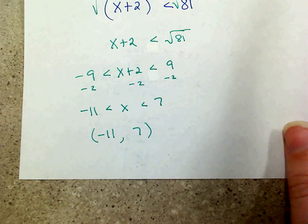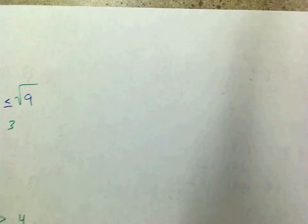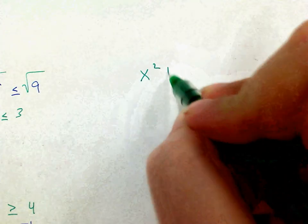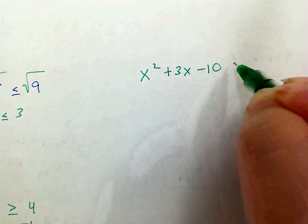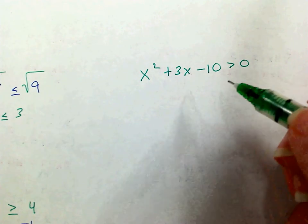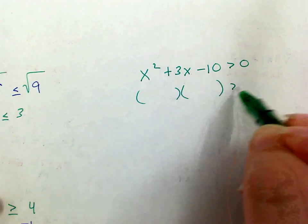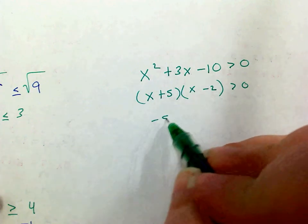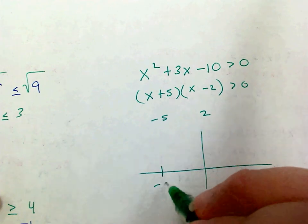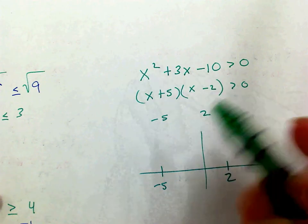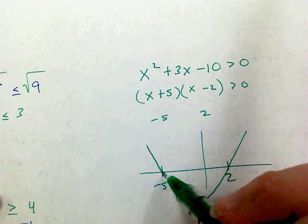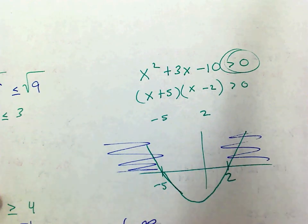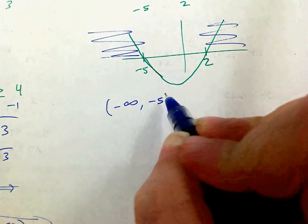What if I'm solving x squared plus 3x minus 10 greater than 0? In this case I can't isolate x, but I can factor. I'm looking for factors of negative 10 that add up to positive 3: positive 5 and negative 2, giving roots of negative 5 and positive 2. I graph the positive quadratic — it opens up — and ask when is it greater than 0? It's above the x-axis to the left of negative 5 and to the right of 2. So the answer is from negative infinity to negative 5, not included, union 2 to infinity.